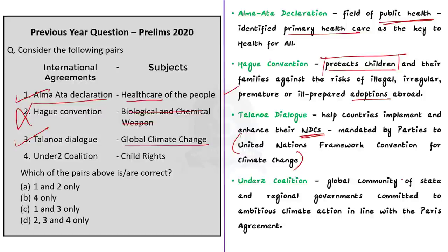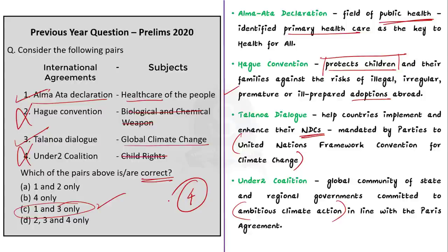The final pair is Under2 Coalition — Child Rights. The Under2 Coalition is a global community of state and regional governments committed to ambitious climate action in line with the Paris Agreement. So this is about climate action, not child rights — an incorrectly matched pair. The question asks for correctly matched pairs only, so the correct answer is option C, one and three only. Today we discussed four questions from UPSC Civil Services Preliminary Examination 2020.